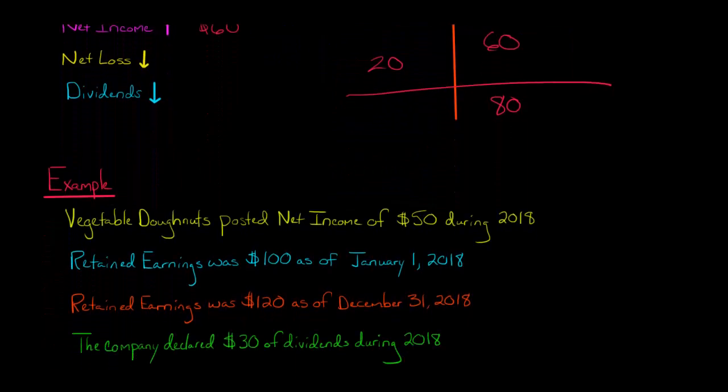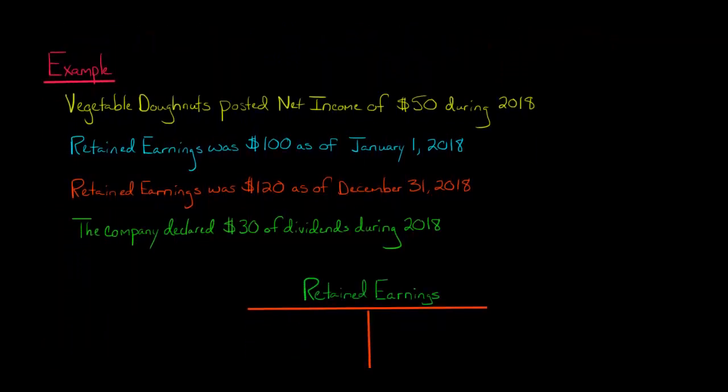Let's do another example. Let's say we've got a company, Vegetable Donuts. We need to make sure those donuts are nice and healthy, and they're made of broccoli and so forth. So they posted net income of $50 during 2018. Retained earnings was $100 as of January 1st, 2018, and then $120 as of December 31st.